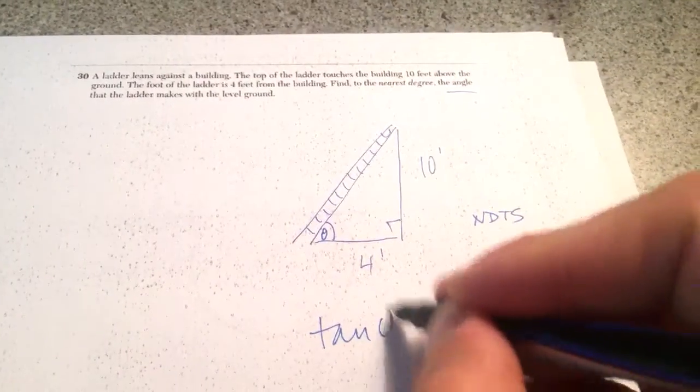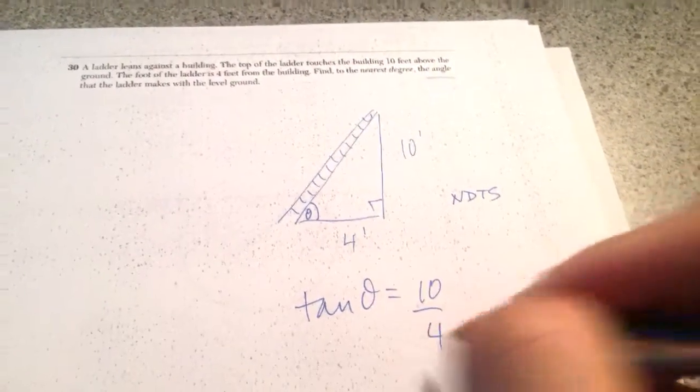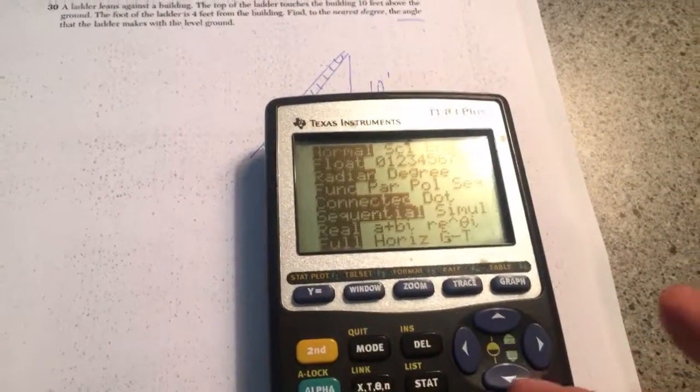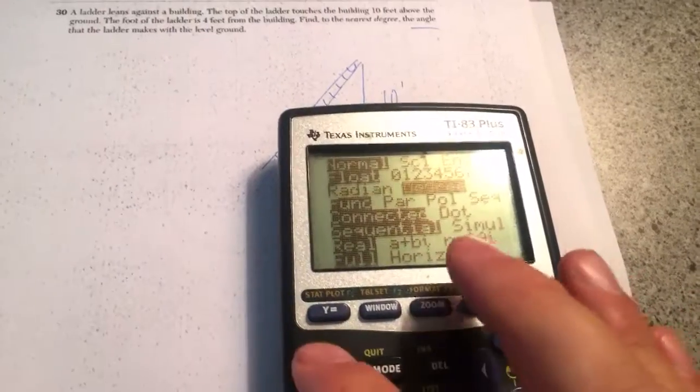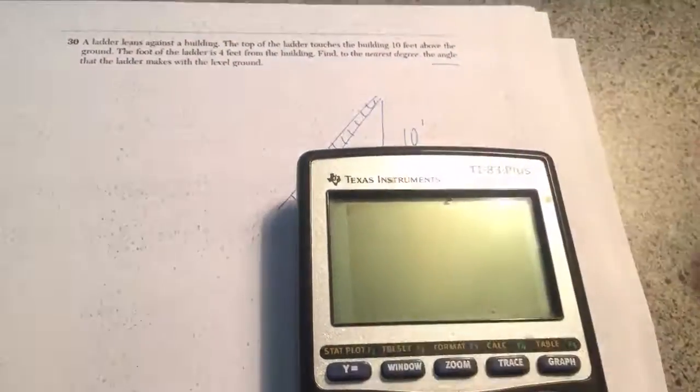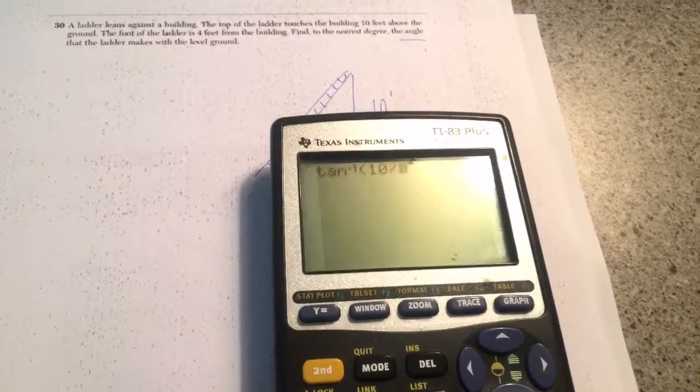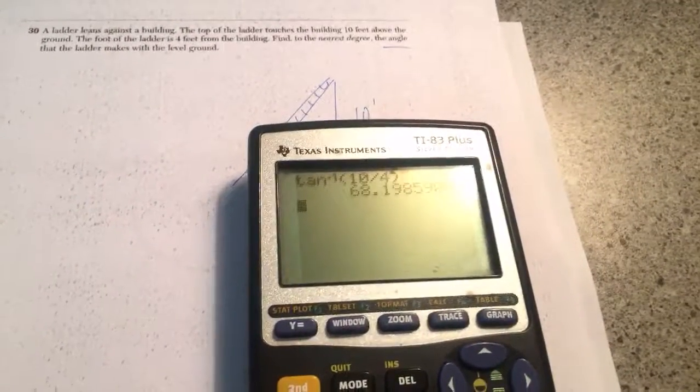So I'm going to say tangent of theta equals 10 over 4. So what I will need to do is go to my calculator. I will need to make sure that I am in degree mode because it says to the nearest degree. I am going to do second tangent and then 10 divided by 4. Type it just like that and hit enter.